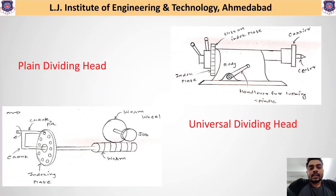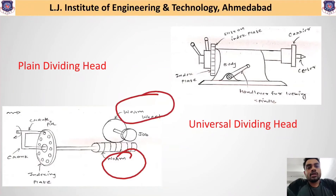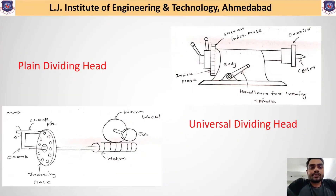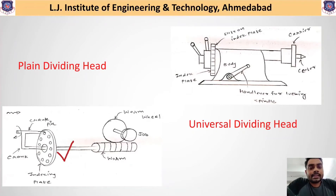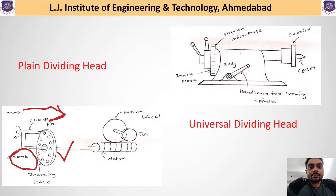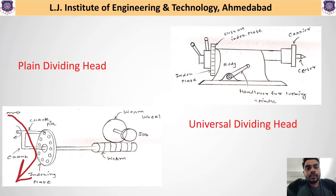The universal dividing head has a similar arrangement to the plain dividing head, but it has two extra parts: a worm and a worm wheel. These two extra components help obtain more than 24 equal divisions on the workpiece. As you can see, the indexing plate has different number of slots and a crank connected to the indexing plate through a crank pin, which is inserted inside one of the slots.